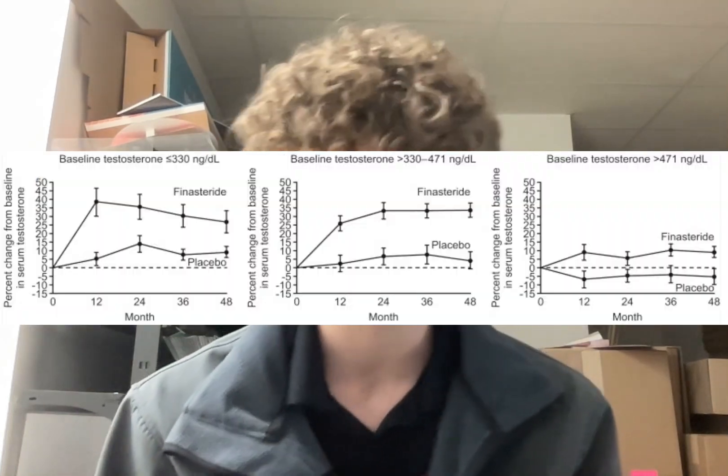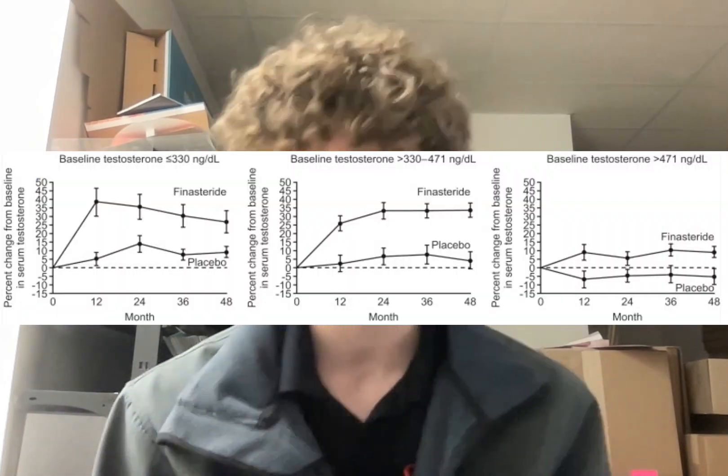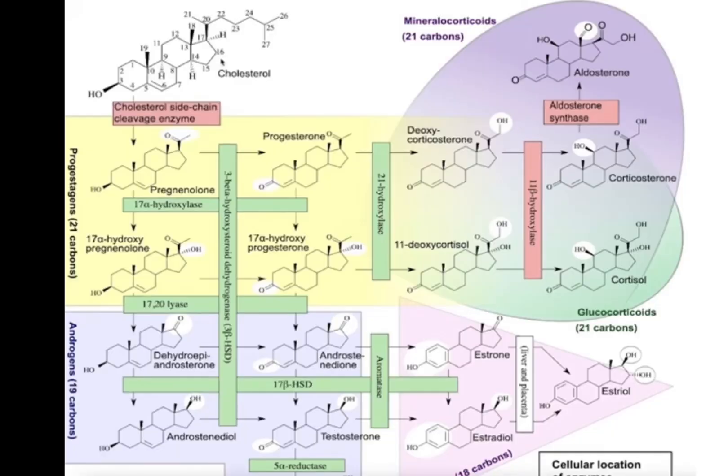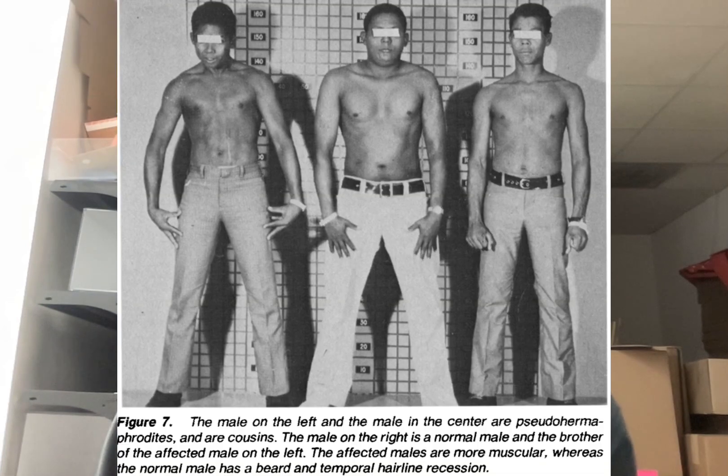There are studies that show that finasteride, a 5-alpha reductase inhibitor, and dutasteride can increase serum testosterone levels, as well as estradiol levels, since when you have more testosterone it can convert into estrogen. To top it all off, it is a good thing to have DHT during puberty — the pseudo-hermaphrodites probably had micropenises — but it just kind of shows that testosterone is the main indicator when it comes to all-around muscle.